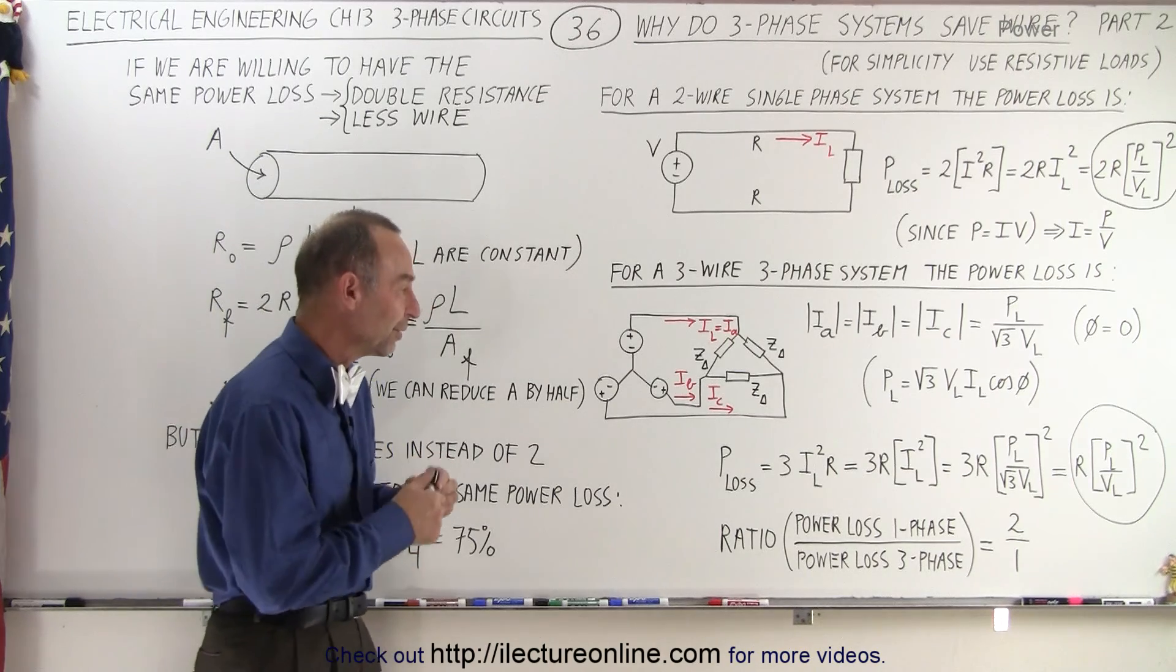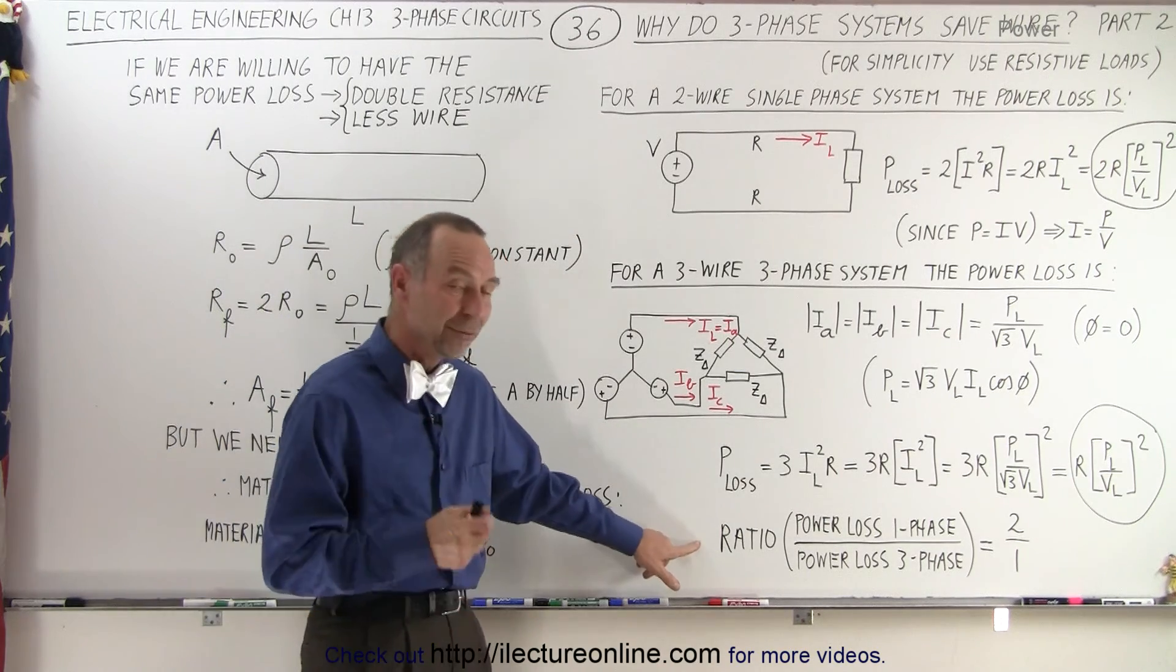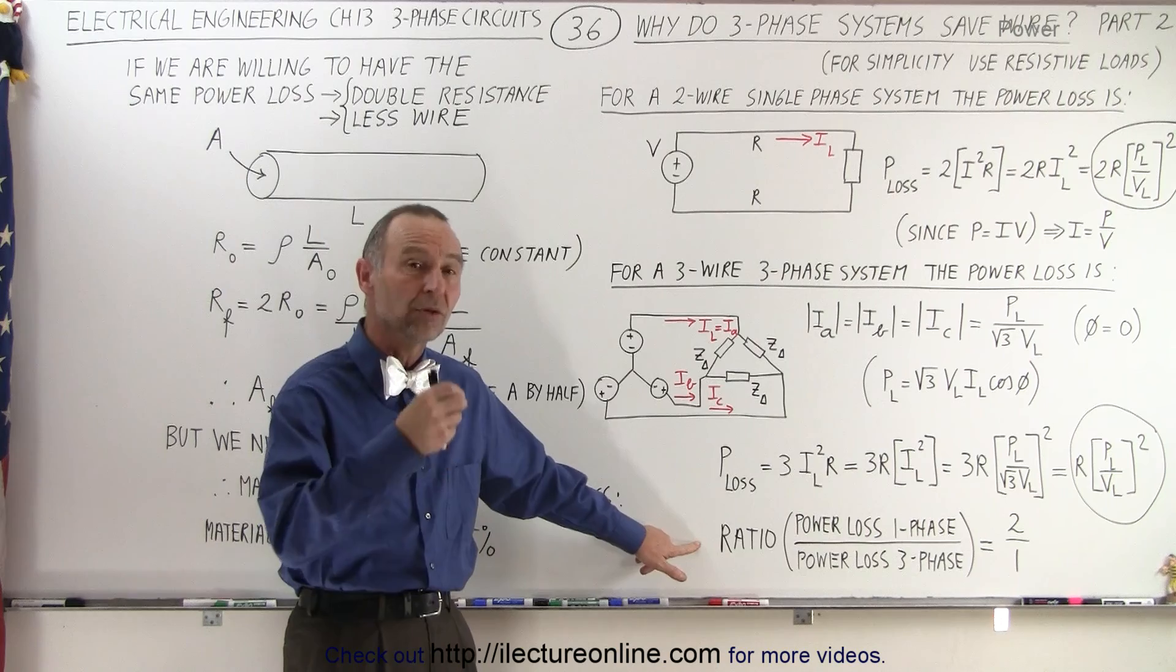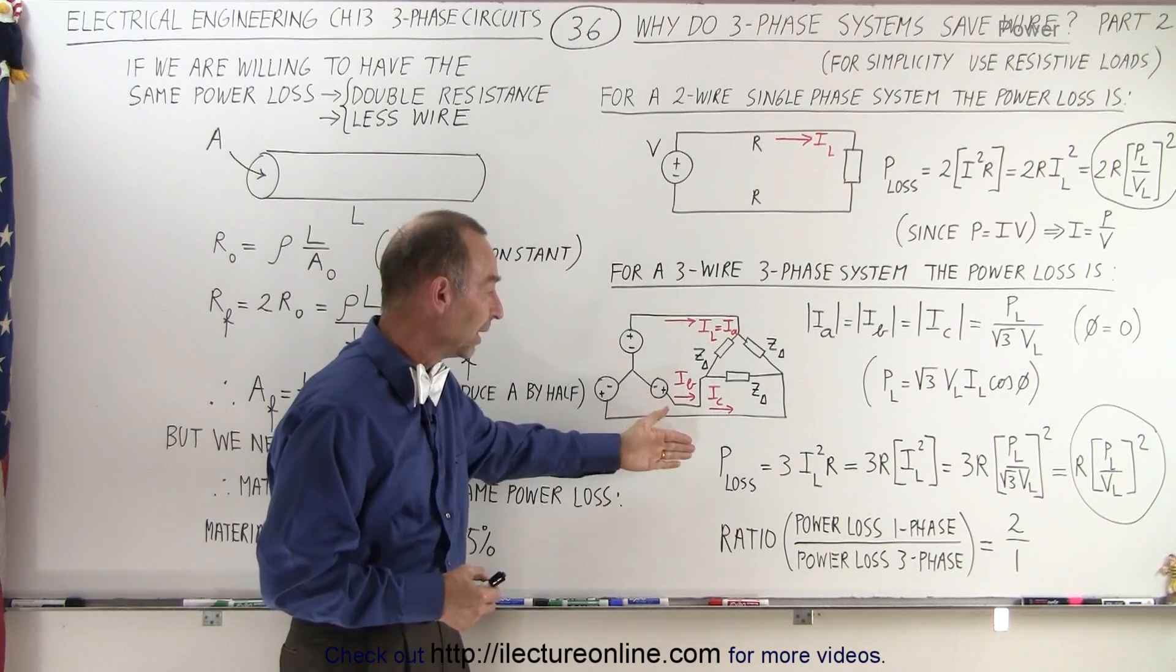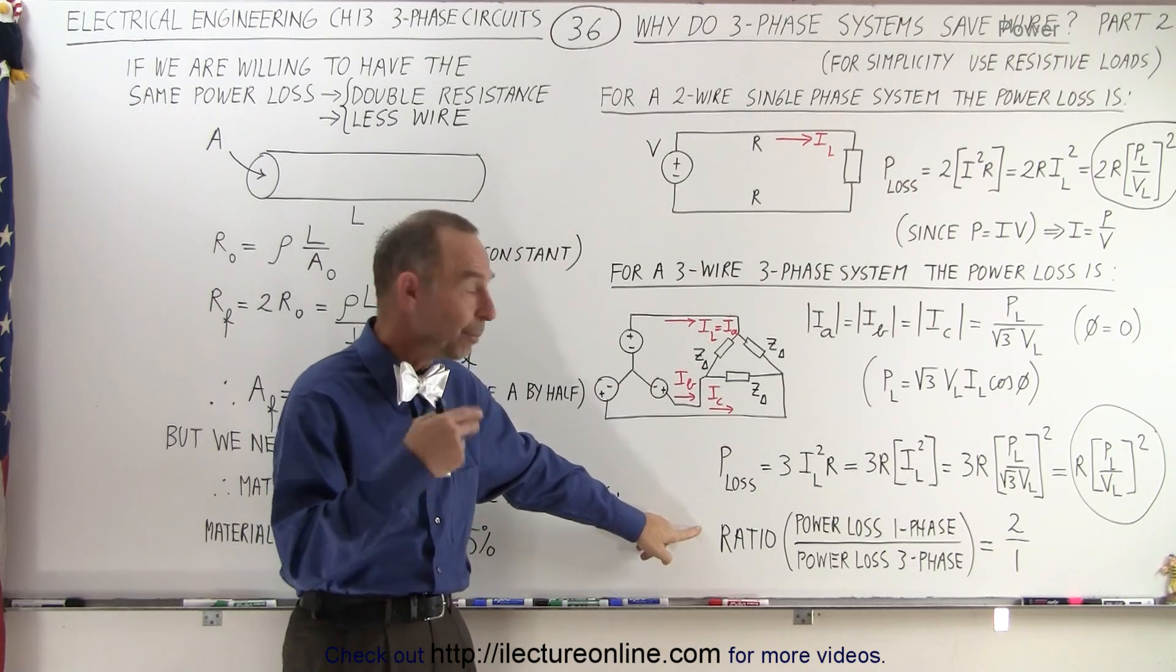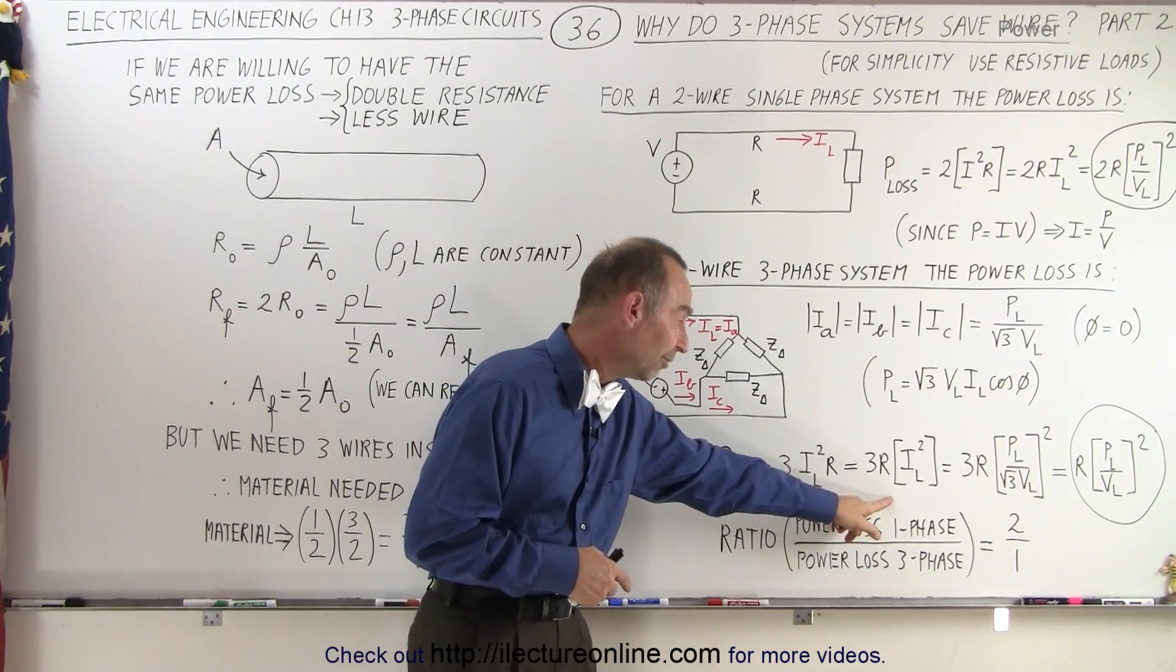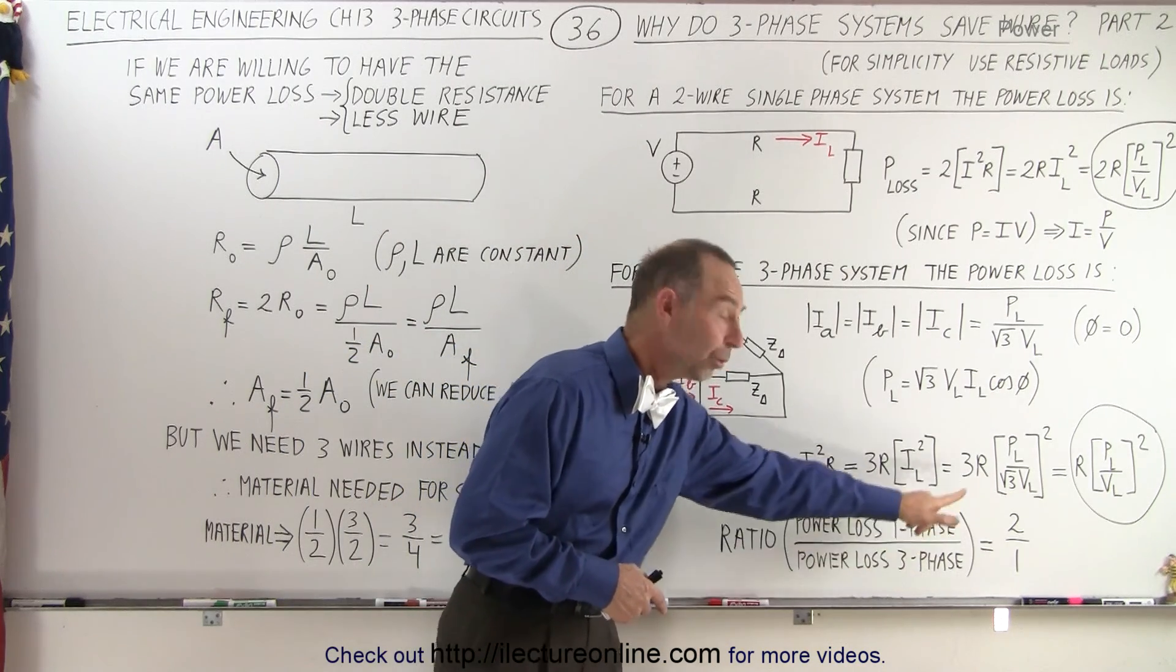So what we ended up doing in the previous video was showing that if we use the same kind of wiring in both systems, the single-phase system or the three-phase system, it turned out that the ratio of the power loss for a one-phase system versus a three-phase system was two to one.